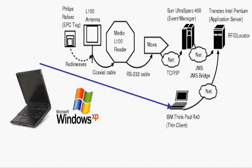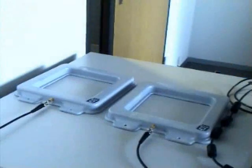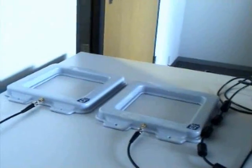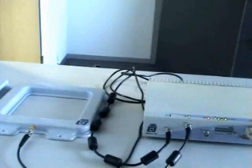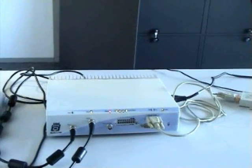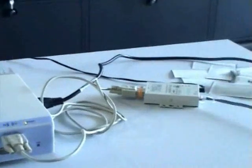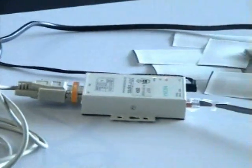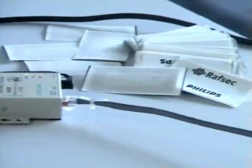A client can then connect to the RFID Locator through a web interface. This is the concrete hardware we were using for our test cases. We first have the Taxas Medio L100 with two antennae. This reader is connected to a converter taking serial raw data as input and dispatching them on the Ethernet.